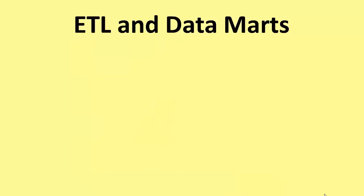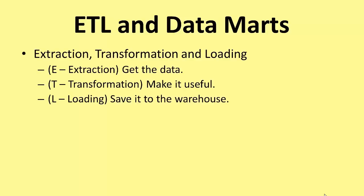ETL stands for extraction, transformation and loading. These are the three stages you have to go through to create a data warehouse. First, you have to extract the data from the in-house databases — getting the data from the original database into the staging area. When it's in the staging area, you've got to transform it to make it useful, getting all the data into the same format: pounds or names, surnames and titles.